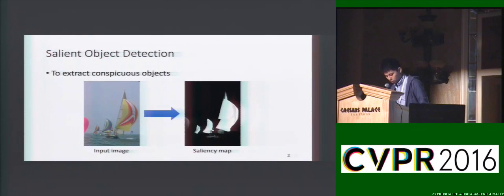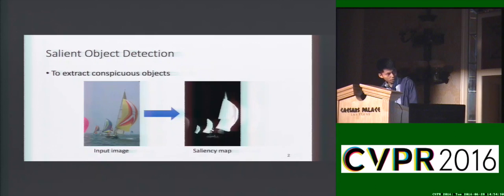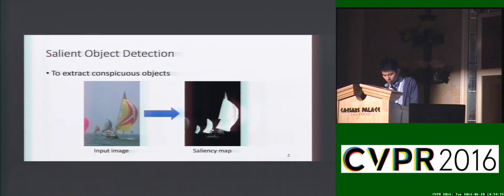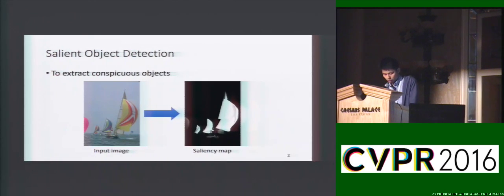Salient Object Detection aims to extract conspicuous objects in the image. It usually serves as a pre-processing step for many computer vision tasks. A desirable algorithm not only needs to be accurate, but also has to be efficient.